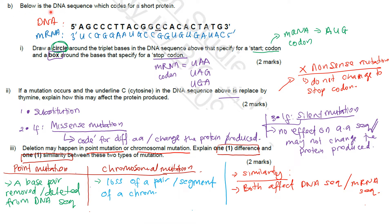Question 1B: The DNA sequence codes for a short protein. Question (i) asks you to draw a circle around the triplet bases in the DNA sequence that specify a start codon, and a box around the bases that specify a stop codon. To answer this, you must know the start codon sequence.